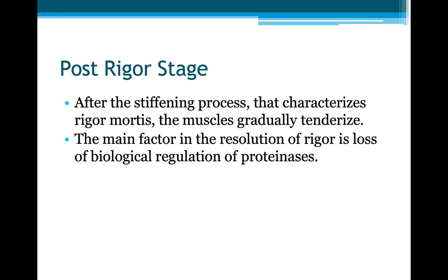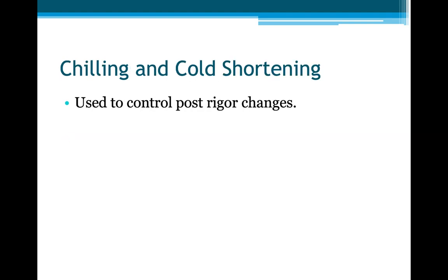In the post-rigor stage, after the stiffening process characterizing rigor mortis, the muscle gradually tenderizes. The main factor in this resolution of rigor is the loss of biological regulation of proteases. Chilling and cold shortening are used to control post-rigor changes.